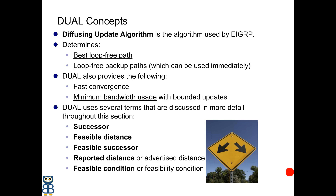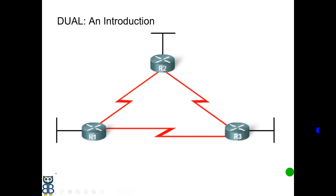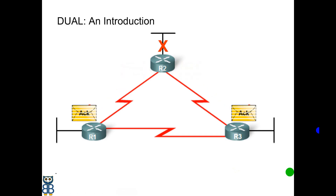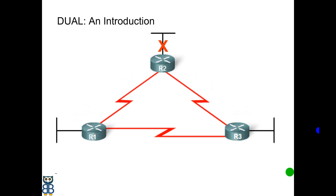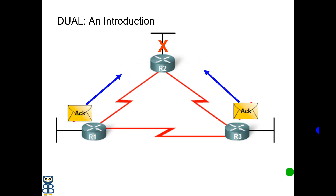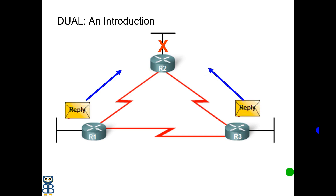Let's take an example to understand how the DUAL algorithm works. A directly connected network on Router 2 goes down. Router 2 sends an EIGRP update message to its neighbors indicating the network is down. Router 1 and Router 3 return an EIGRP acknowledgement indicating they have received the update. Router 2 realizes it does not have an EIGRP backup route, known as a feasible successor, so it sends an EIGRP query to its neighbors asking if they have a route to the downed network. Router 1 and Router 3 send an EIGRP reply stating they do not have a route, and Router 2 returns an acknowledgement confirming it received the reply.